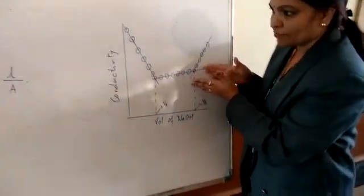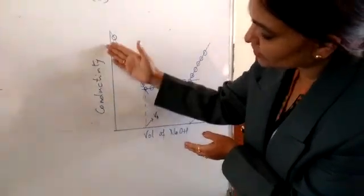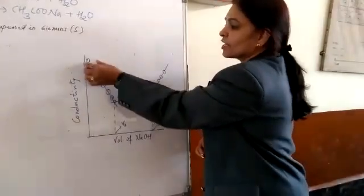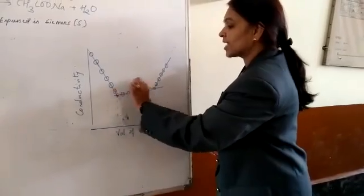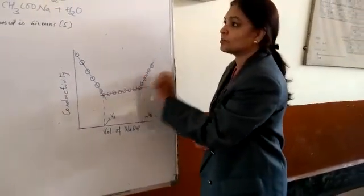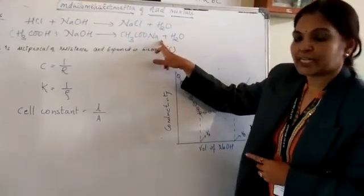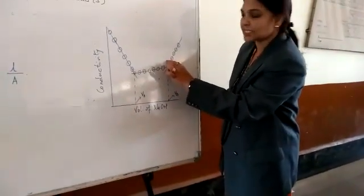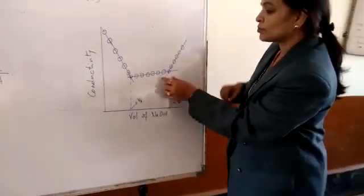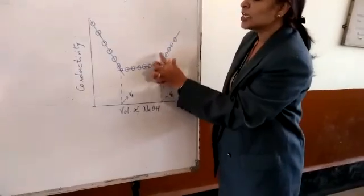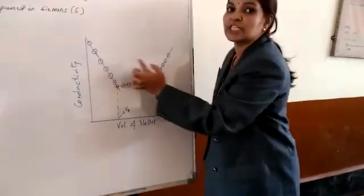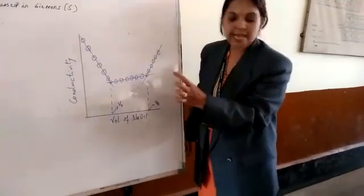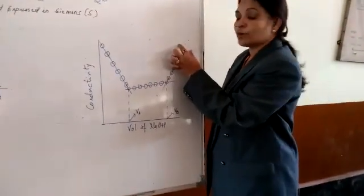The graph plots conductivity versus volume of NaOH. First, there is a decrease in conductivity due to the decrease in H⁺ concentration. The second limb shows a slight increase in conductivity because of the formation of sodium acetate, which is a stronger electrolyte compared to acetic acid. At the end, you observe a steep increase in conductivity as the neutralization of both acids is complete and OH⁻ concentration increases.